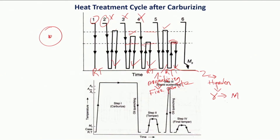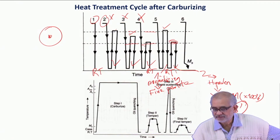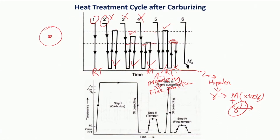But actually this martensite is not 100 percent. If it is not 100 percent then what else does it have? It is likely to have retained austenite, which is not very conducive for dimensional accuracy or the volume of the material. Because during heat treatment or during subsequent use due to mechanical activation, this retained austenite can convert either into bainite or into martensite depending on the path it follows.